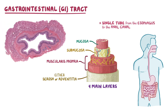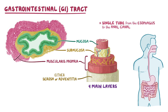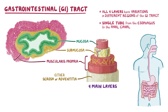Even in this low-power cross-section of the esophagus, we can see the inner mucosa, submucosa, and muscularis propria, although the outer adventitia isn't present in this image. All four layers have variations of their structure and function in different regions of the GI tract, but the mucosa is the layer that typically has the most significant changes.